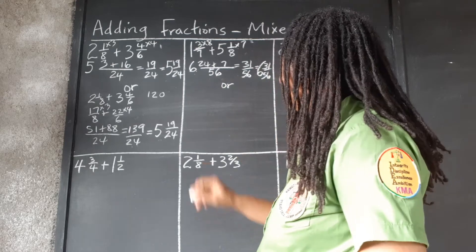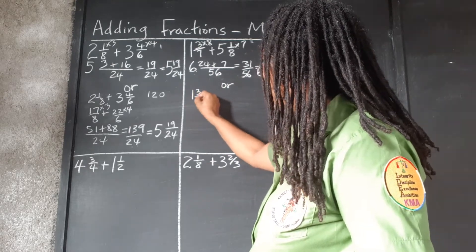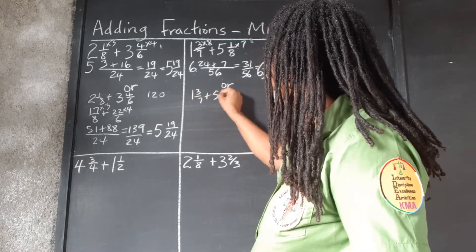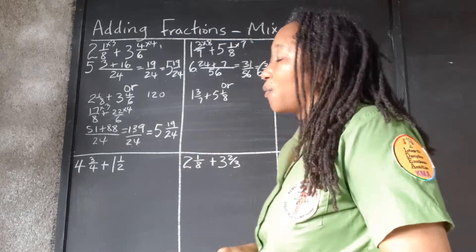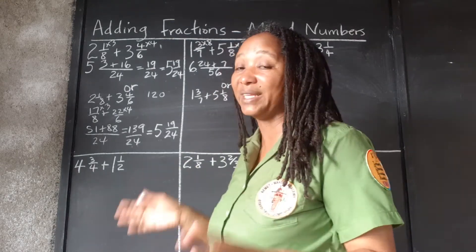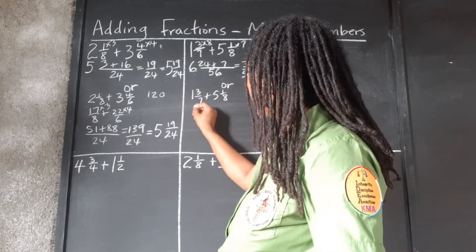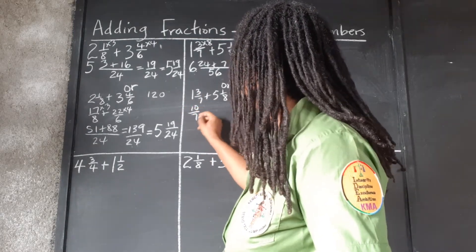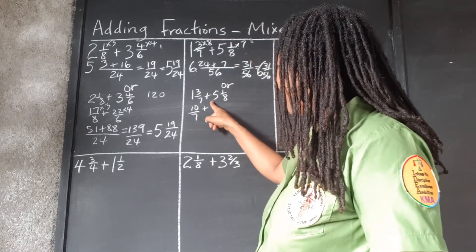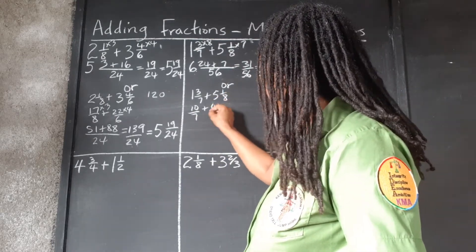Or let's try the other method. So 1³⁄₇ plus 5⅛. So now we're going to change them to improper fractions. 7 times 1, 7 plus 3, 10 over 7. 8 times 5 is 40 plus 1, 41 over 8.